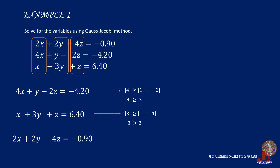Next, for the coefficient of y, the absolute value of 3 is compared with the absolute values of positive 1 and positive 1, leading to 3 is greater than or equal to 2 — a true statement. The last equation has the coefficient of z in absolute value compared to the other variables, giving 4 is greater than or equal to 4.